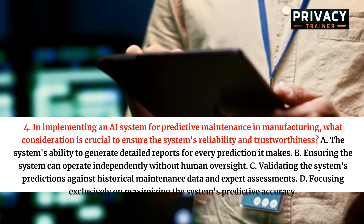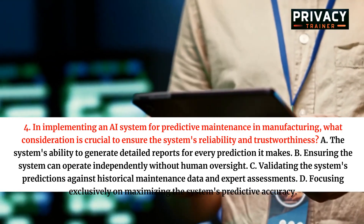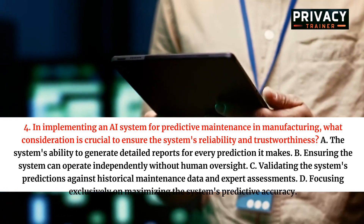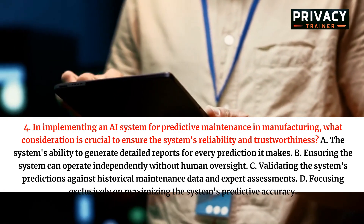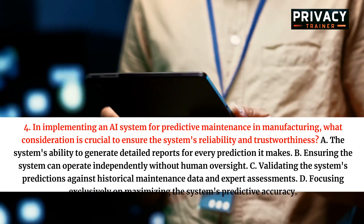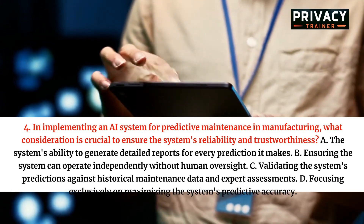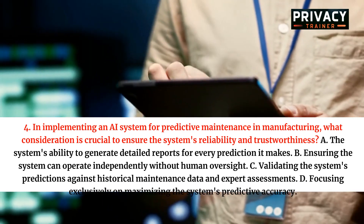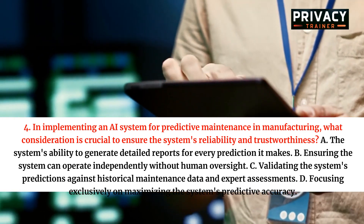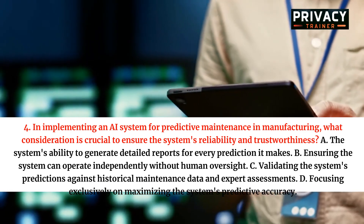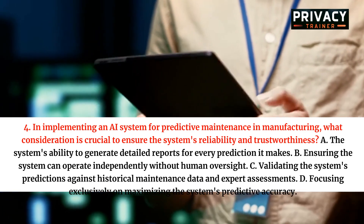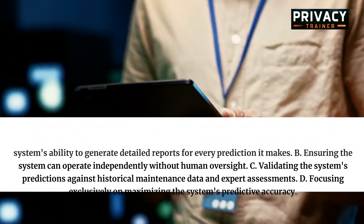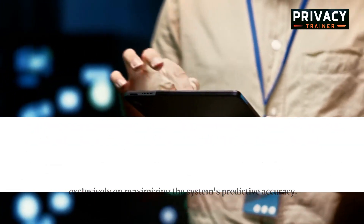Question 4. In implementing an AI system for predictive maintenance in manufacturing, what consideration is crucial to ensure the system's reliability and trustworthiness? A. The system's ability to generate detailed reports for every prediction it makes. B. Ensuring the system can operate independently without human oversight. C. Validating the system's predictions against historical maintenance data and expert assessments. D. Focusing exclusively on maximizing the system's predictive accuracy.